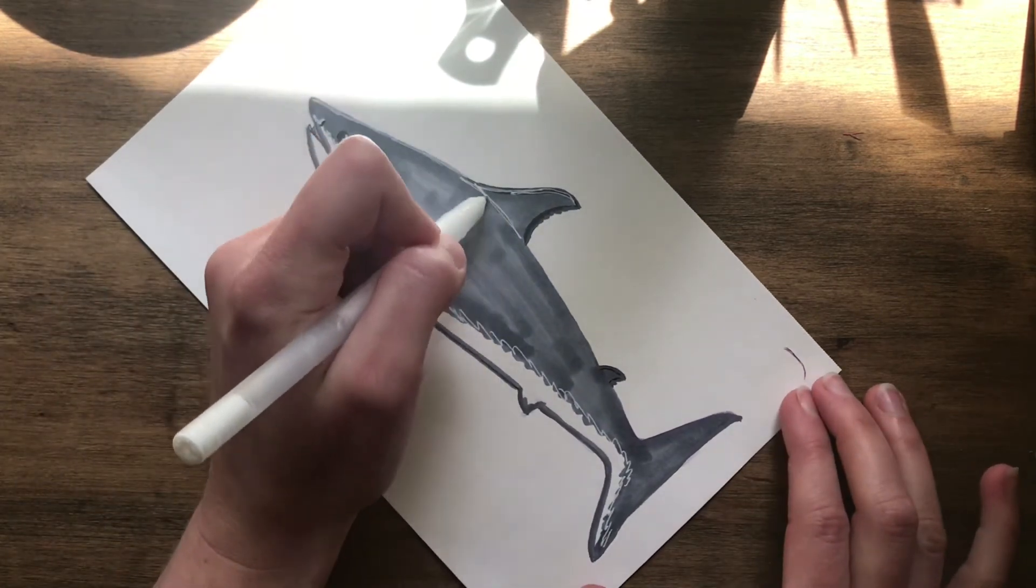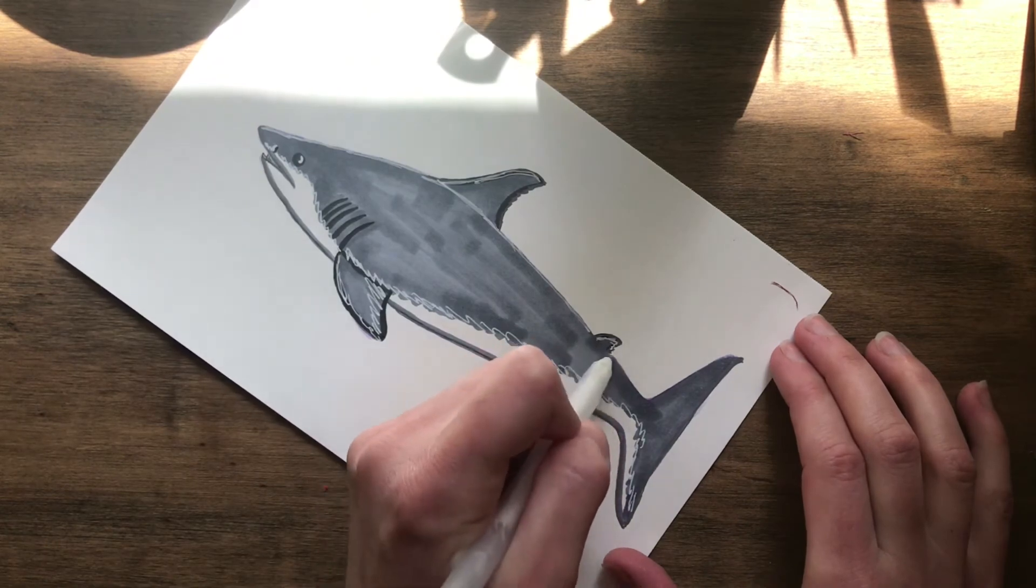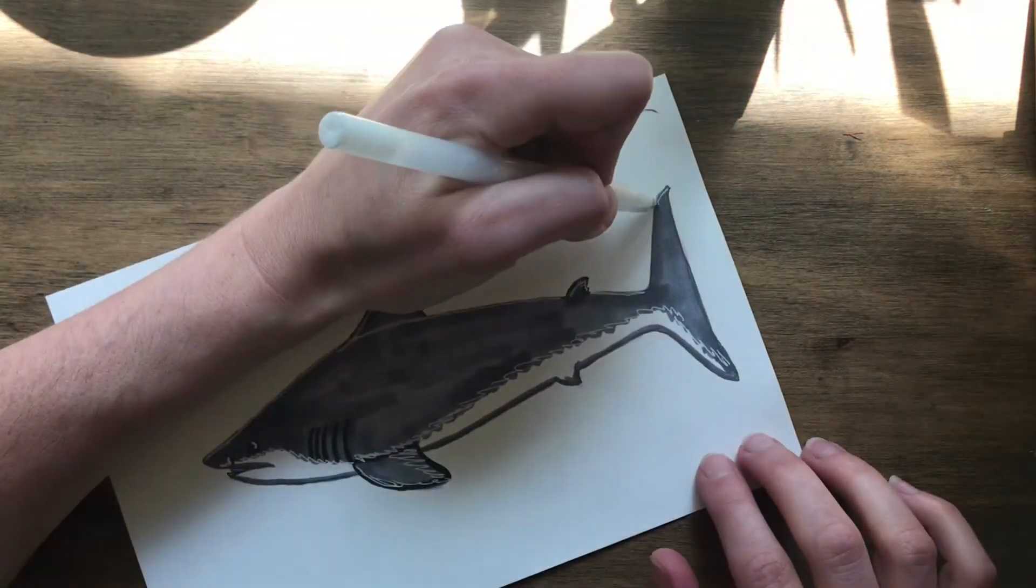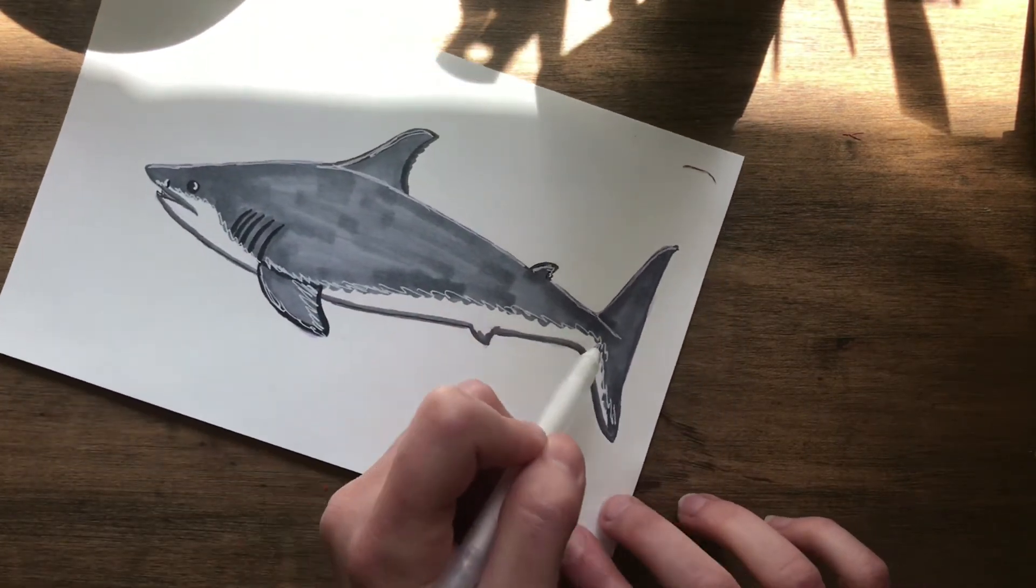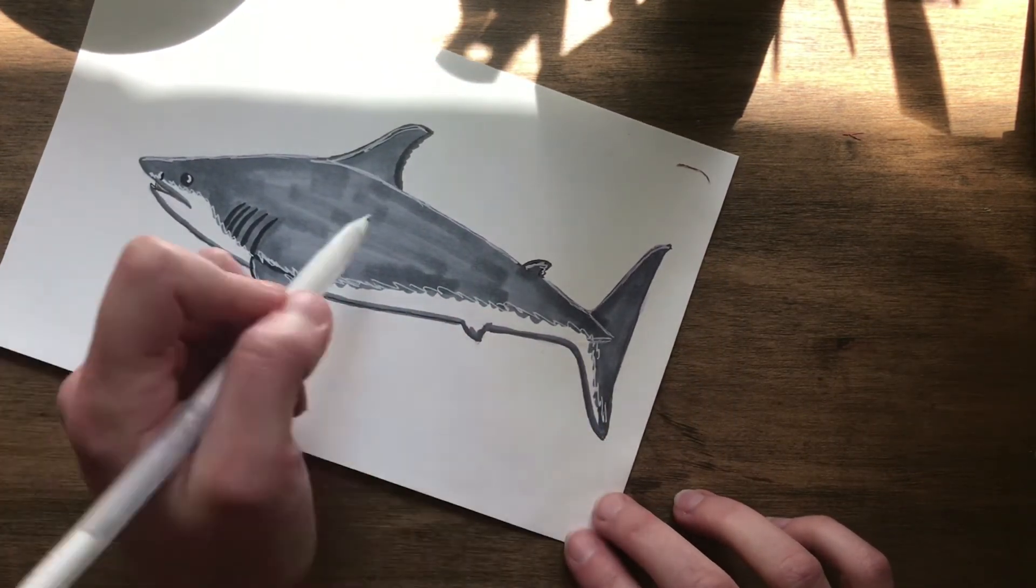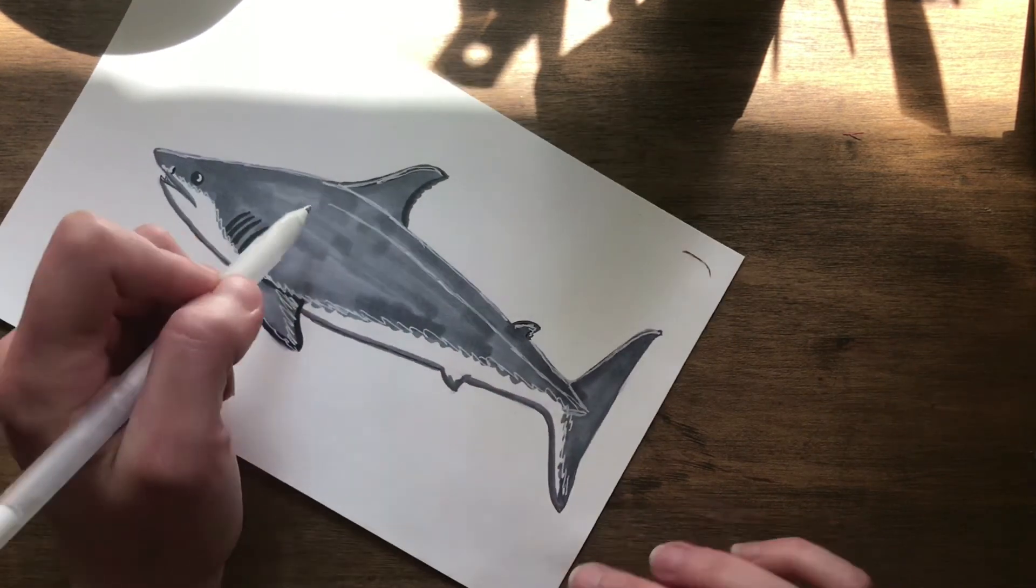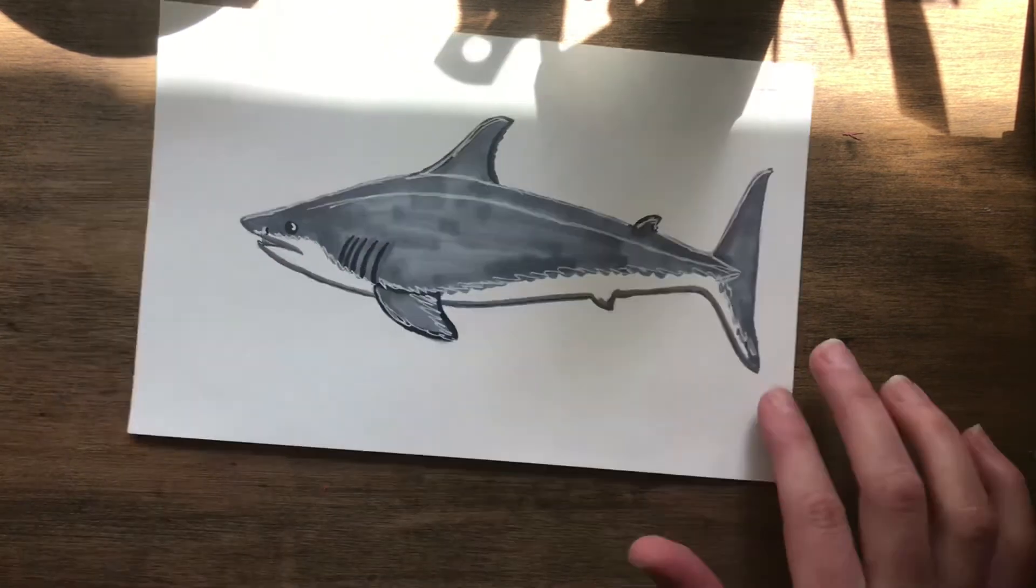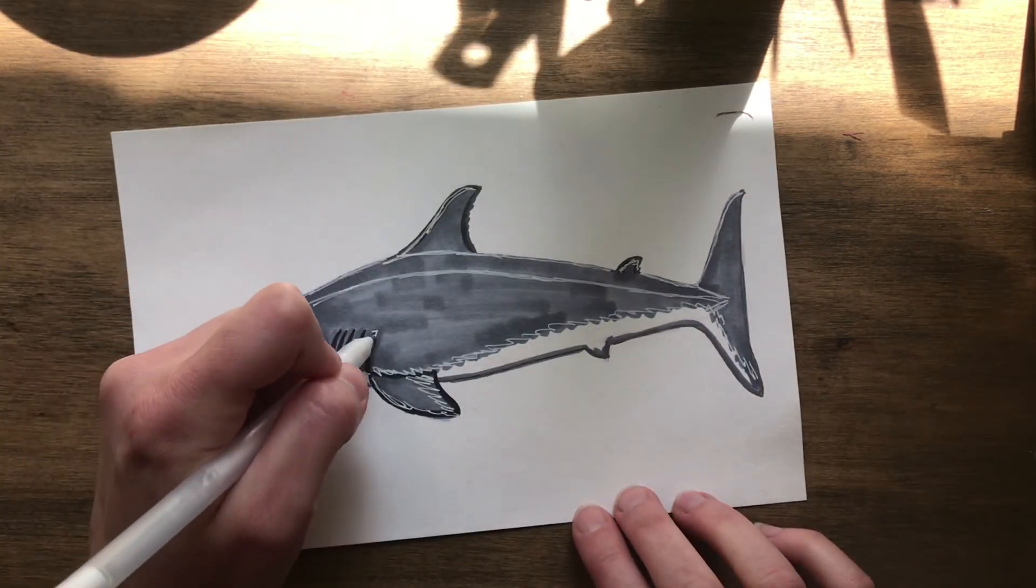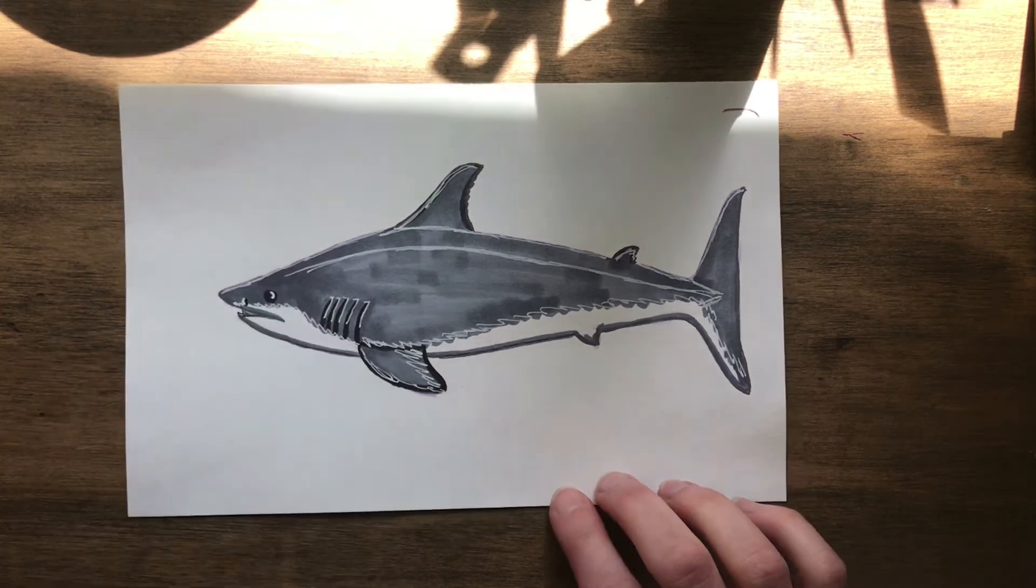And on the top fin. And just on the top of the whole body. And this is just lighting the shark up a little bit. Like giving him some highlights. Making him look more interesting. It's good to have darks and lights in your drawings. And then do a little down the side of the body. And then kind of put some on each of the gills.